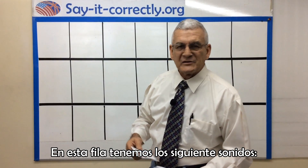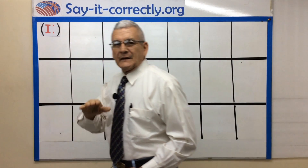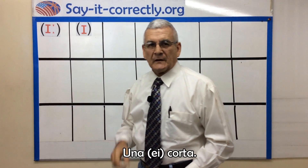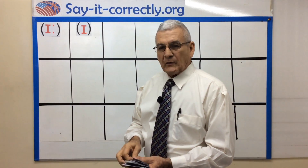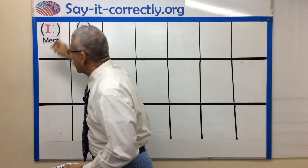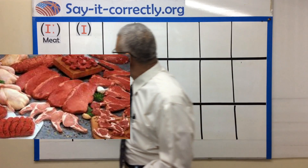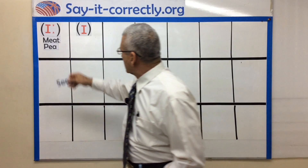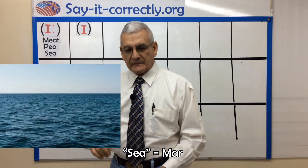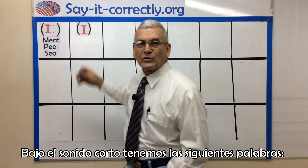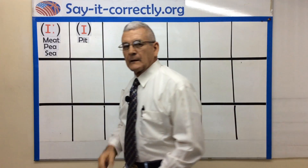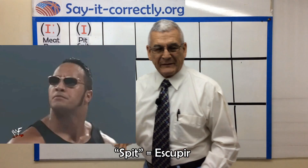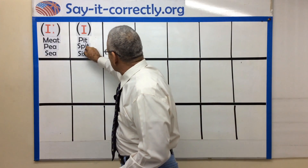In this row we have the following sounds and words. Long E — words like meet, pee, see. Under the short E sound, we have the following words: pit, spit, six.